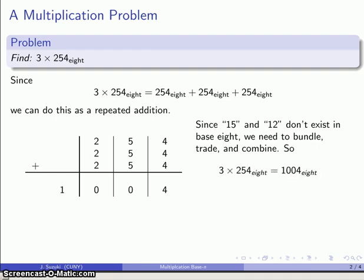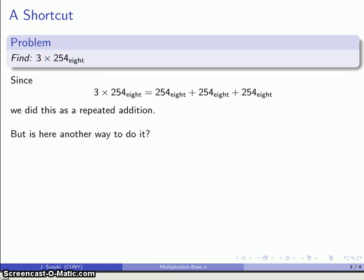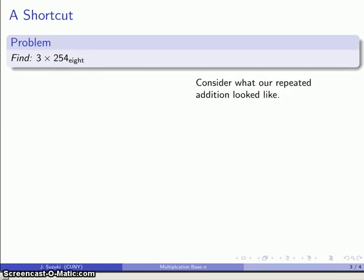Now, this is a somewhat long-winded way of approaching the problem. But we can take a couple of shortcuts. So again, same problem: find 3 multiplied by 2, 5, 4, base 8. But again, I'm going to do this as a repeated addition. But let's consider what that repeated addition looks like.